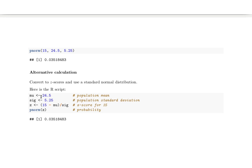Our population mean is 24.5, our population standard deviation sigma is 5.25, and so therefore the z-score for 15 is going to be 15 minus mu divided by sigma, and then we need to have the pNorm of that z-value.